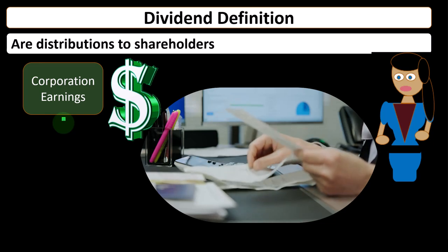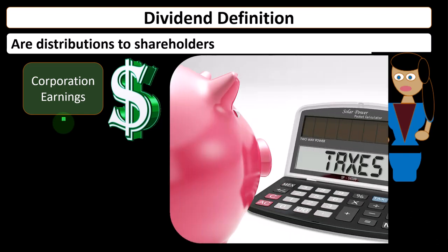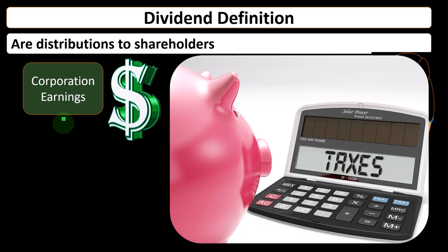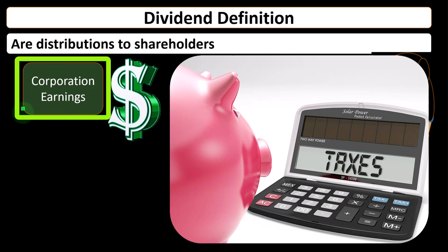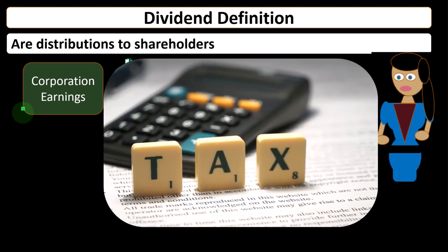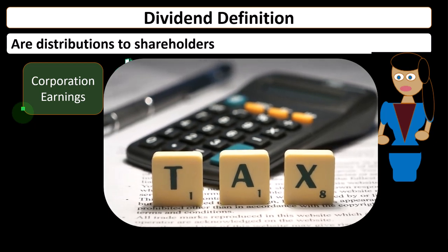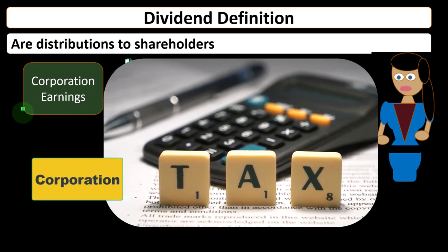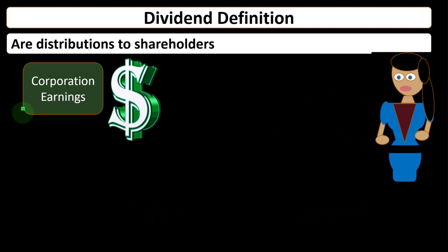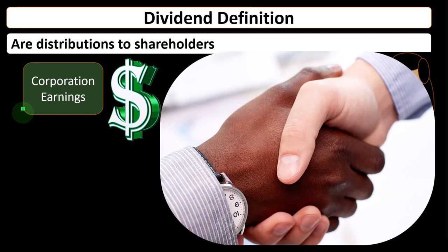With a corporation, we have a similar situation except that the corporate entity is taxed in and of itself, just like an individual. Instead of one owner, you have many owners who hold a percentage of the corporation determined by equal shares. Why invest in a corporation? You want earnings distributed as dividends, or you want the stock value to rise so that when you sell you'll have a capital gain.